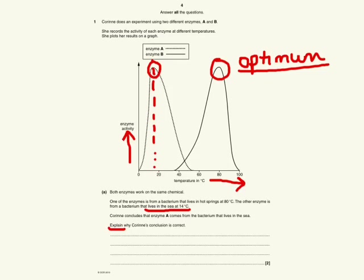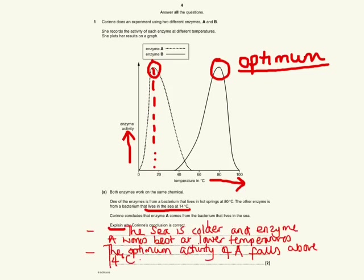For two marks, the first thing to say is: the sea is colder and enzyme A works better at lower temperatures, and the optimum activity of A falls above 14 degrees C.